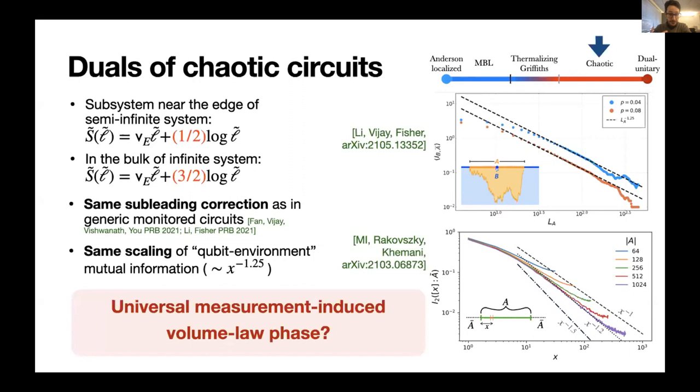So with this, we have, I think, pretty convincing evidence that these chaotic circuits once dualized, indeed realize the universal non-thermal volume law phase that is found in unitary measurement circuits.